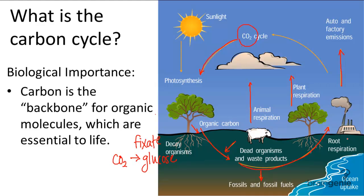The problem with the burning of fossil fuels is that it's knocking the carbon cycle out of balance. The amount of CO2 that plants and animals respirate out is approximately equal to the amount of CO2 that plants breathe in during photosynthesis — but now you're adding more CO2 through auto and factory emissions from the burning of fossil fuels.